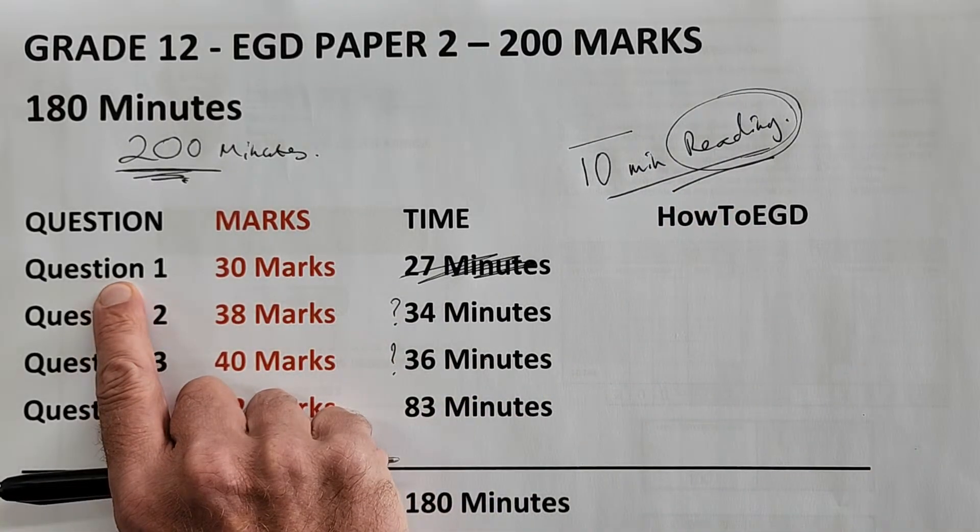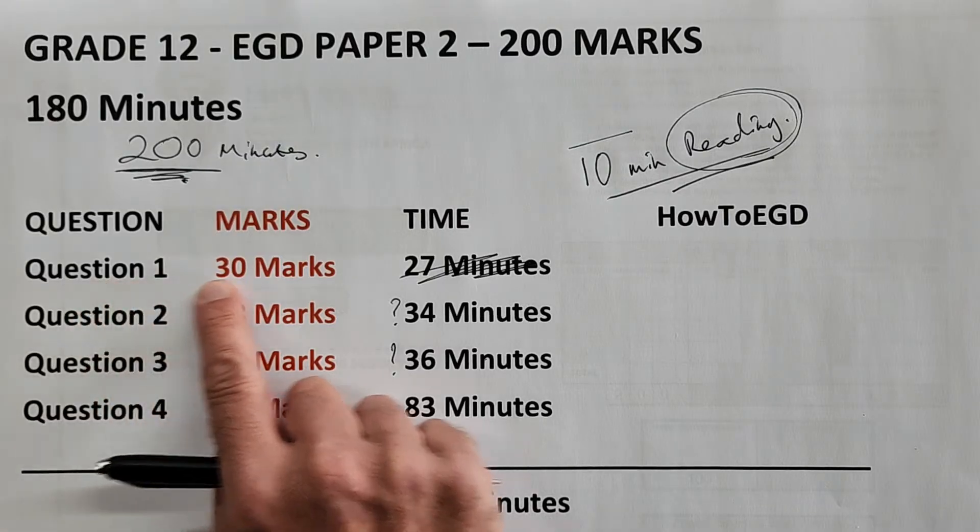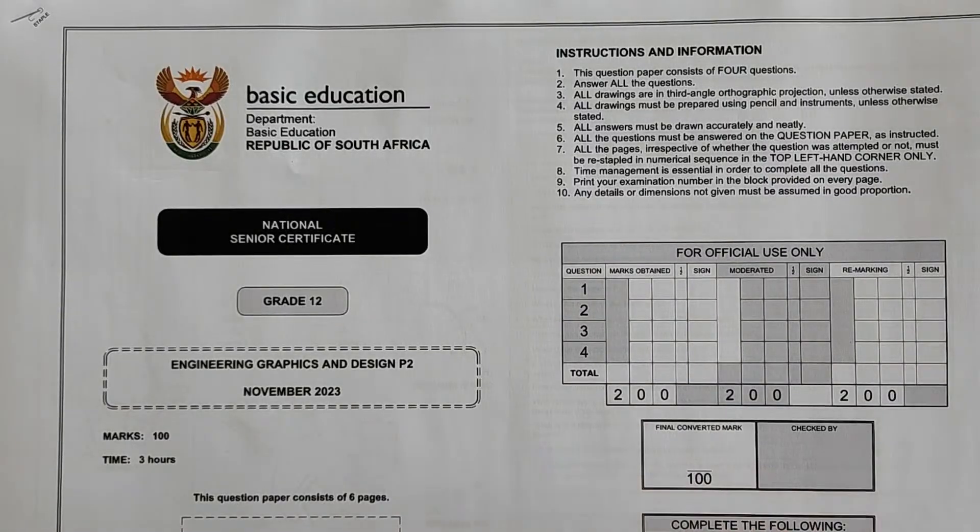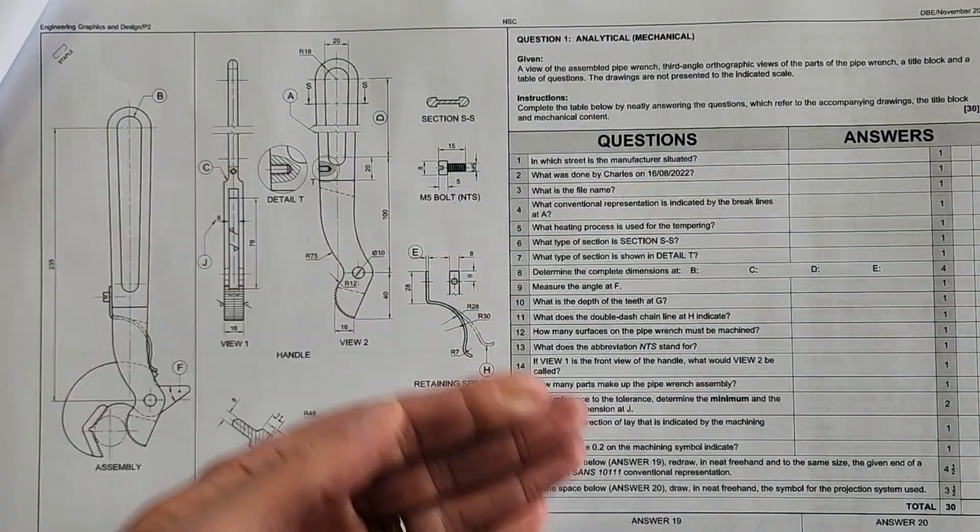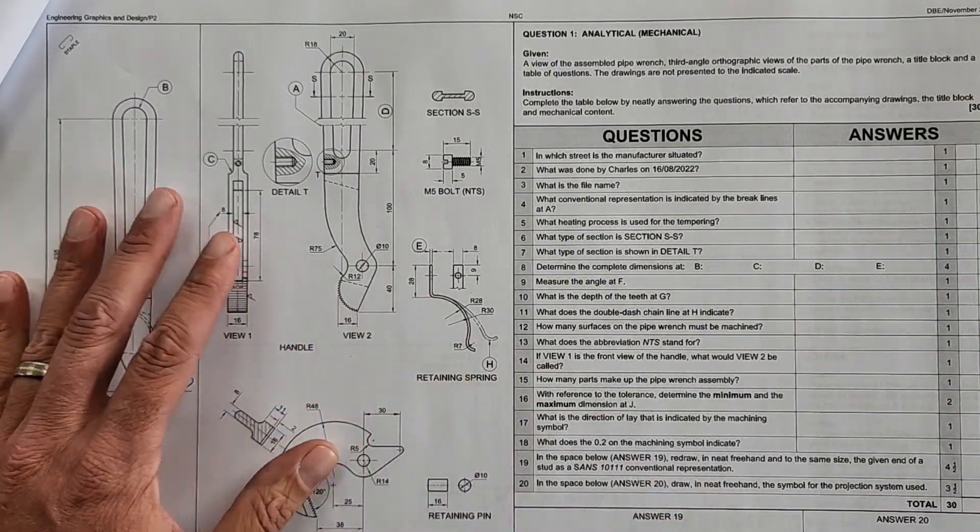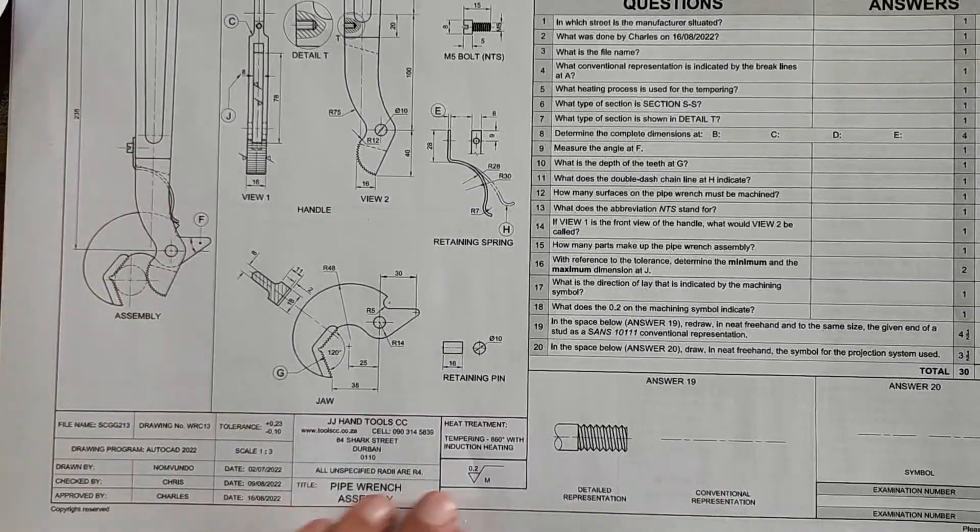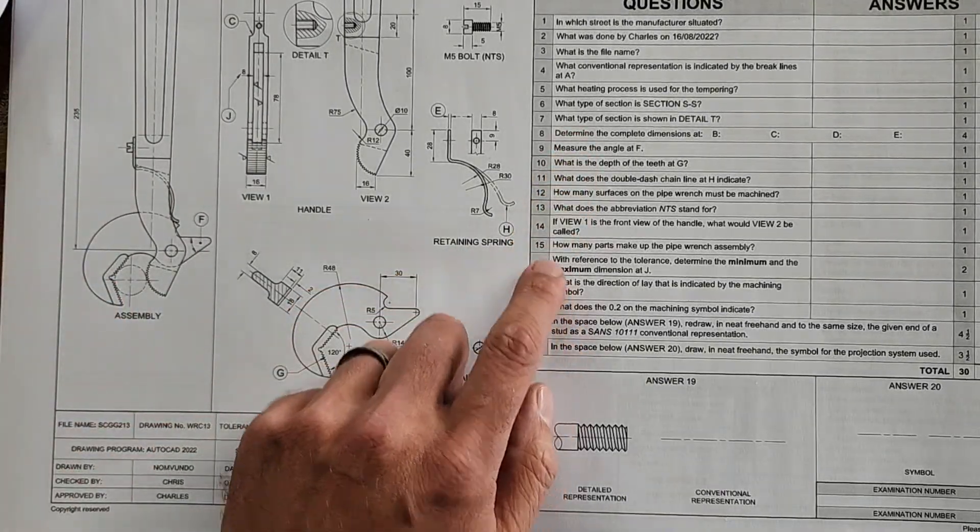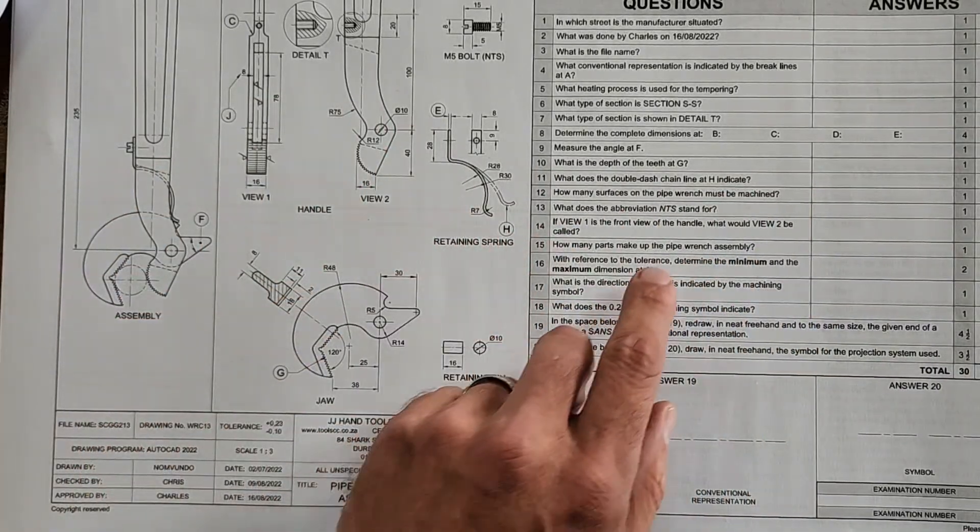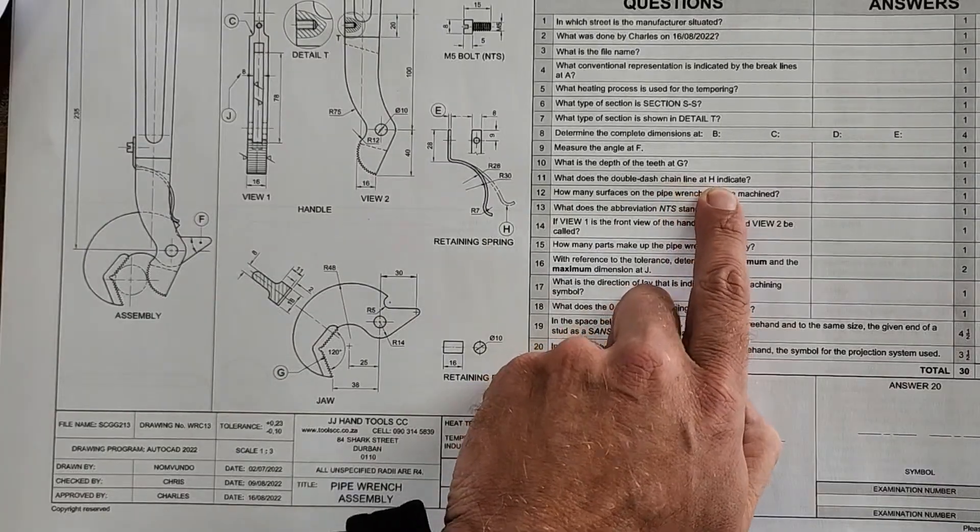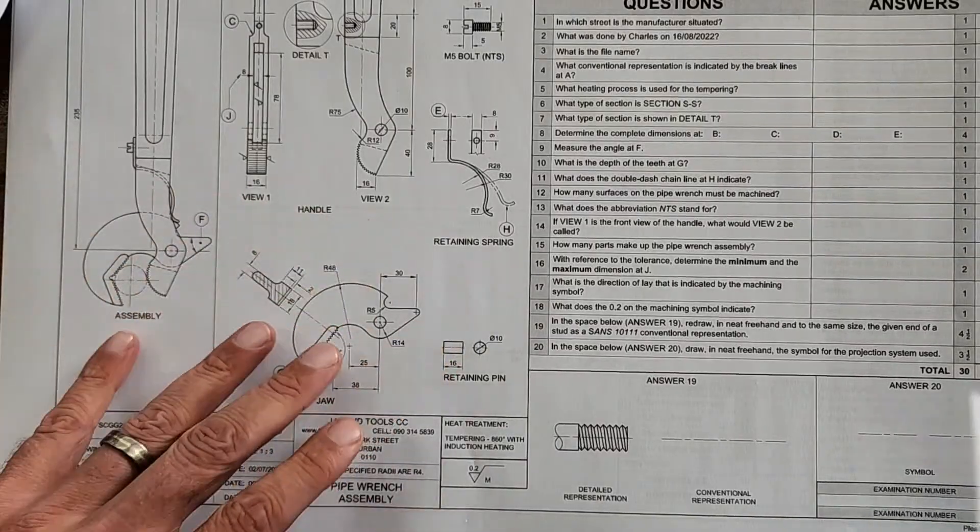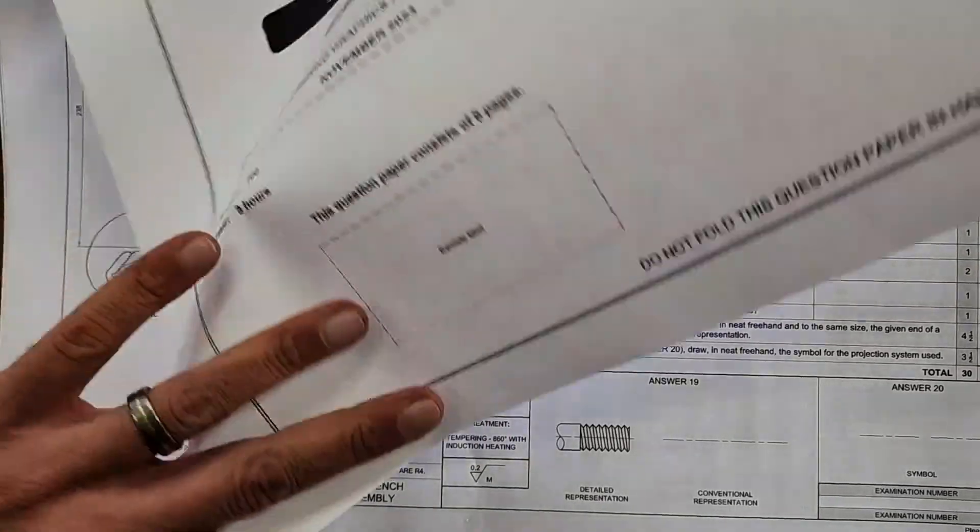I suggest that 10 minutes is spent first on Question 1, reading the mechanical analytical and understanding fully the different components. There's a lot of information on this page. Part of your 10 minutes, after reading through the others, come back to this page and study all the different details. Read each question and see if you can already find the answer. When you're asked what is chain line at H, for instance, you won't have to search for H later.